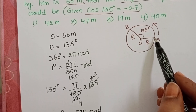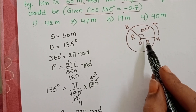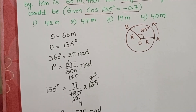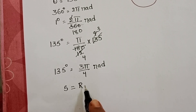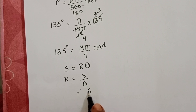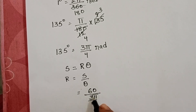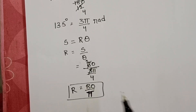The person moves from A to B along the curved path. The length of the arc equals the radius of the circular path multiplied by the angle subtended between the two vectors. So the distance travelled equals R × θ, which gives R = S/θ. With distance = 60 meters and θ = 3π/4, the radius R equals 80/π.